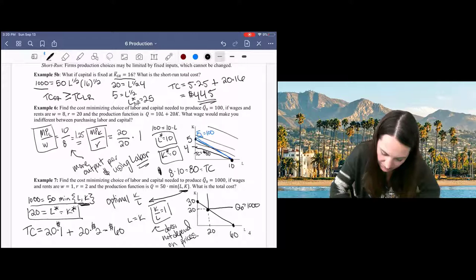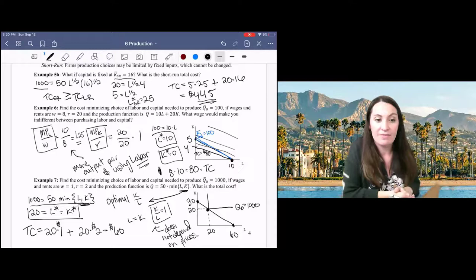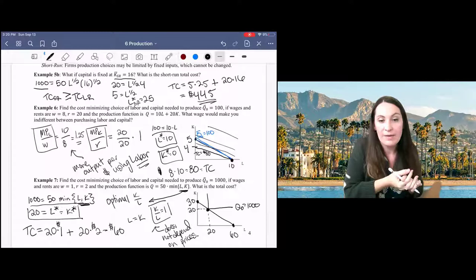So for perfect substitutes, you want to look at the bang for buck, highest marginal product per dollar spent. And for perfect complements, you want to set equal the terms in the minimum function to find your optimal capital labor ratio.